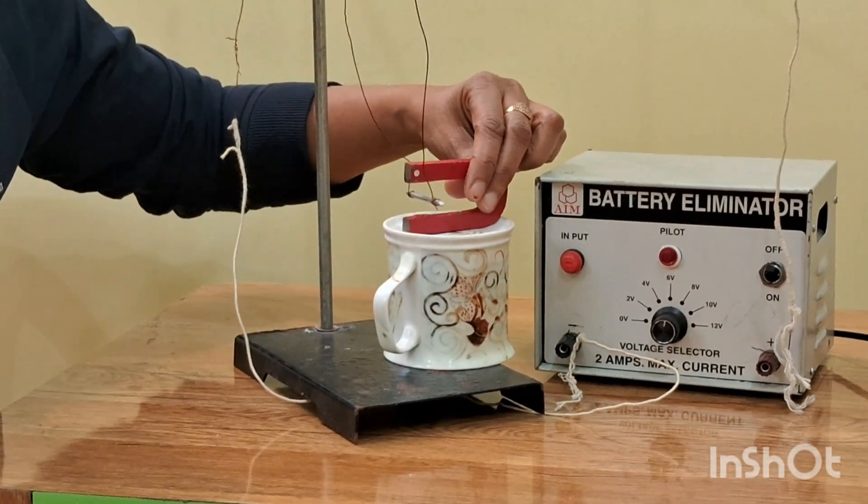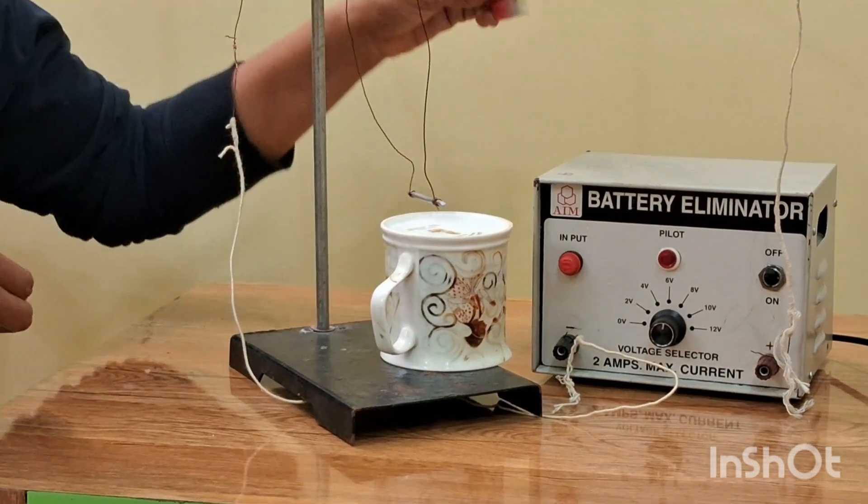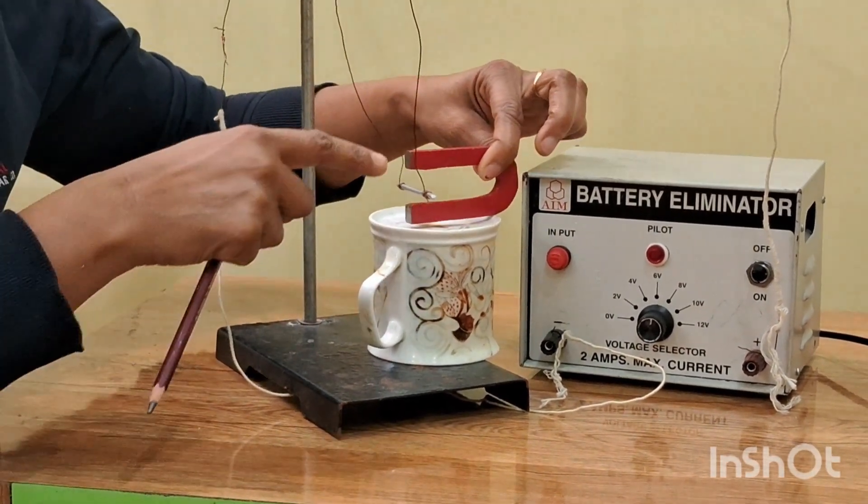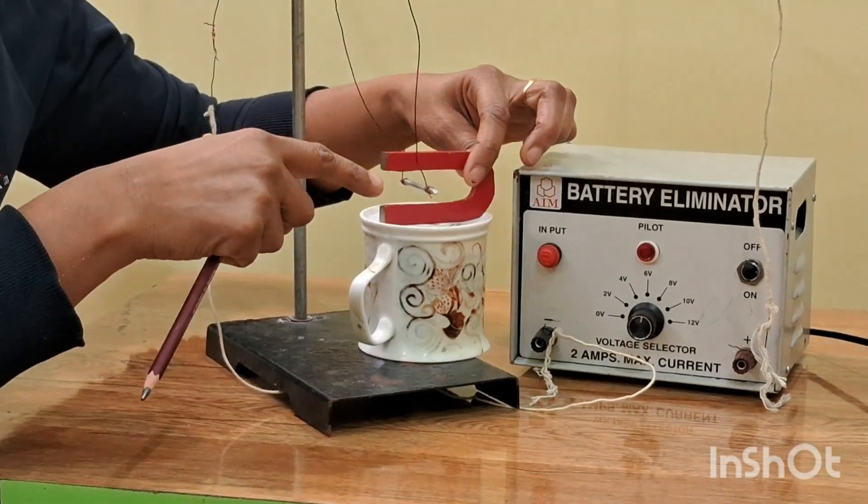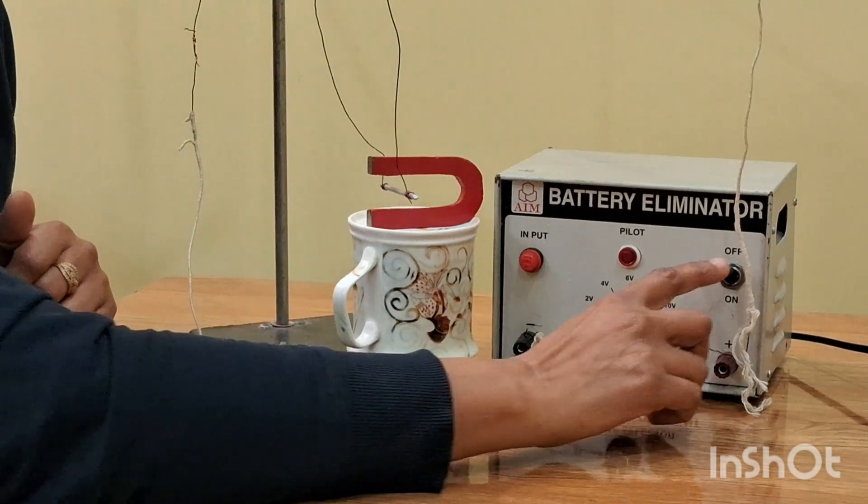Now if I reverse the direction of the magnetic field and change its direction, now this dot, white dot is downwards. When I place it here, I change the direction of the magnetic field. Now let's see the change.